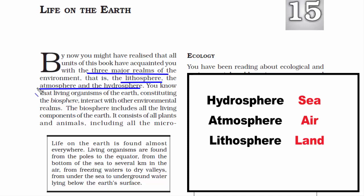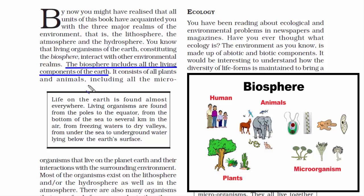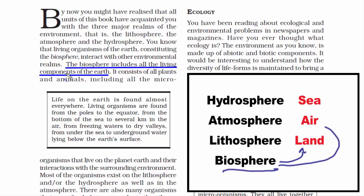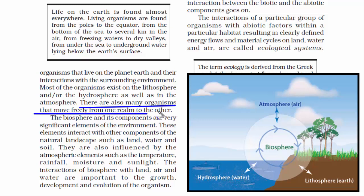There is a fourth domain and a very important domain that forms our environment — it is called biosphere. It consists of living organisms from human beings to animals, to plants, to bacteria, to multicellular organisms. Basically, it includes all the living components of the earth. The biosphere interacts uniquely with the other three domains — in fact, it is also influenced by them.